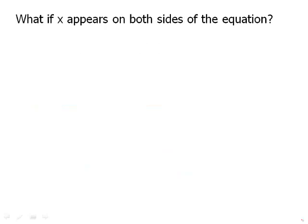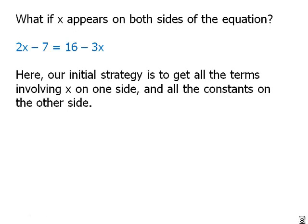What if x appears on both sides of the equation? Suppose we have something like this. Here, our initial strategy is to get all the terms involving x on one side and all the constants on the other side.